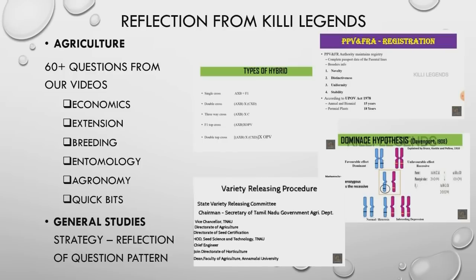In agriculture, economics, extension, breeding, entomology, agronomy — quick bits — we are going to take a look at the 60 plus questions. Types of hybrid, seed definition, dominance hypothesis, variety releasing procedure.